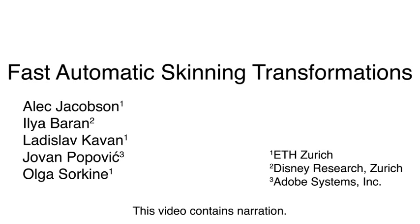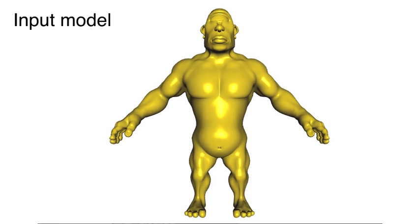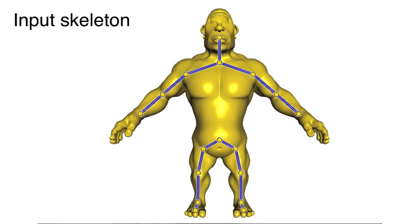Linearly blending transformations with skinning weights is the dominant shape articulation technique. Our method takes a model and a linear blend skinning setup and allows the user to specify only a subset of the handle degrees of freedom.